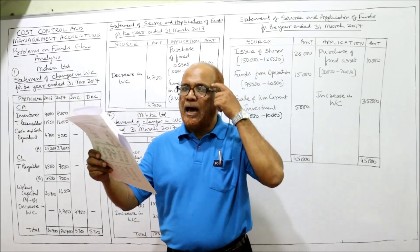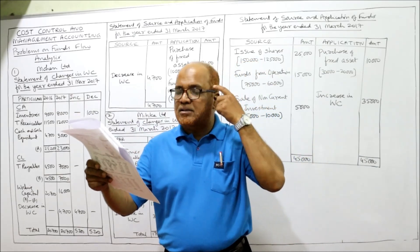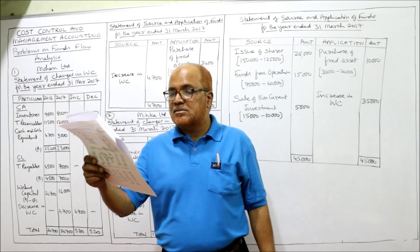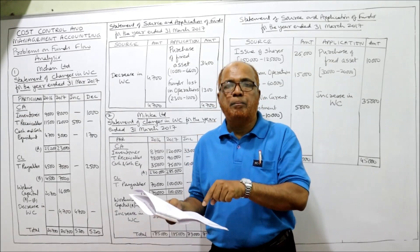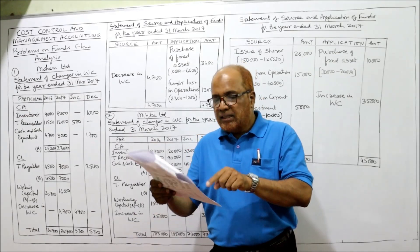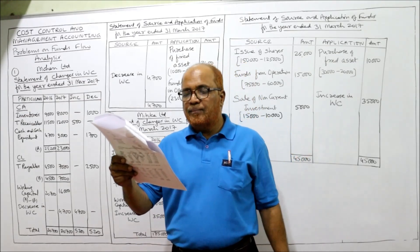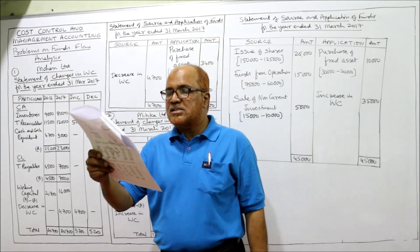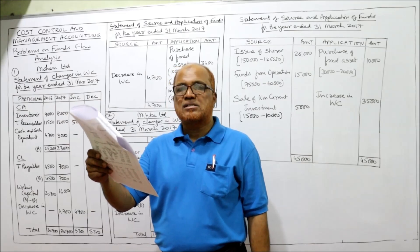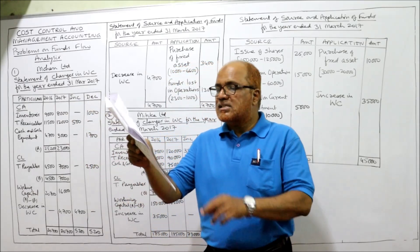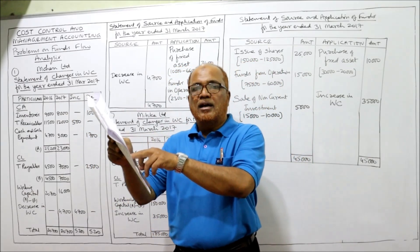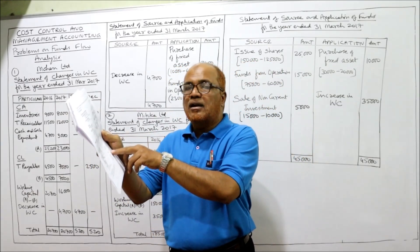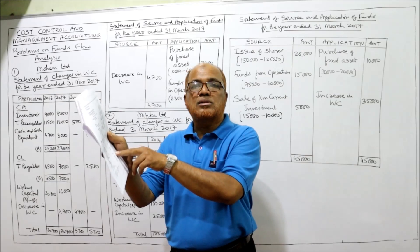Then trade liabilities — trade payables. That is the only current liability. On the asset side, non-current assets: fixed assets. Fixed assets last year 6,600, current year 10,000.